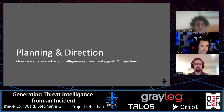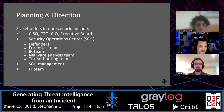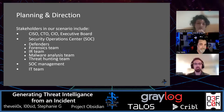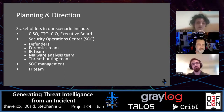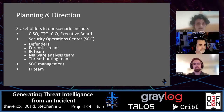Moving into planning and direction. We'll do an overview of the stakeholders in this scenario. The stakeholders for this kill chain are our CSO, CTO, CIO, and executive board. We have people sitting in the SOC — defenders, forensics team, incident response, malware analysis, and threat hunting teams — as well as SOC management and the IT team. This phase of the CTI lifecycle is where our requirements are created.